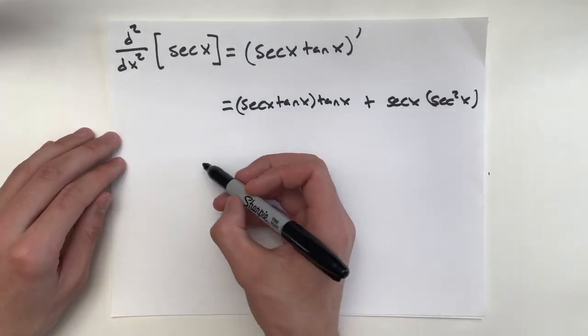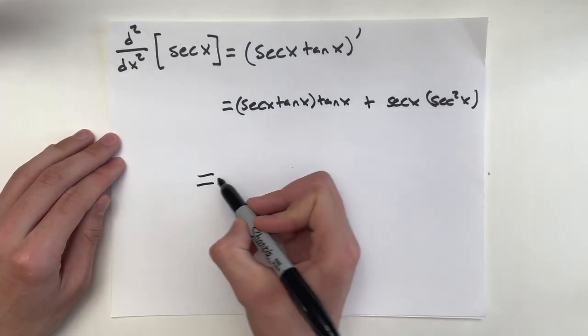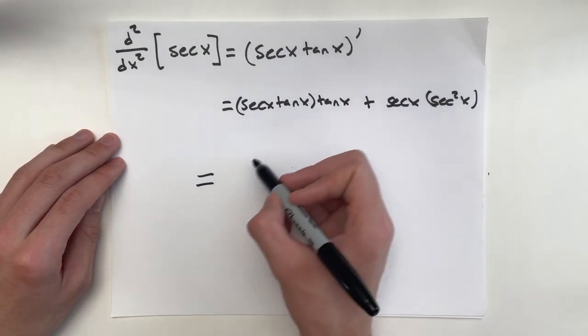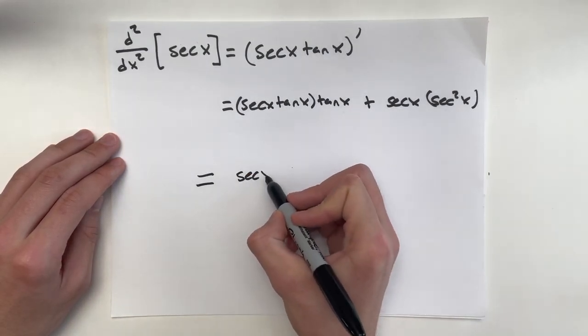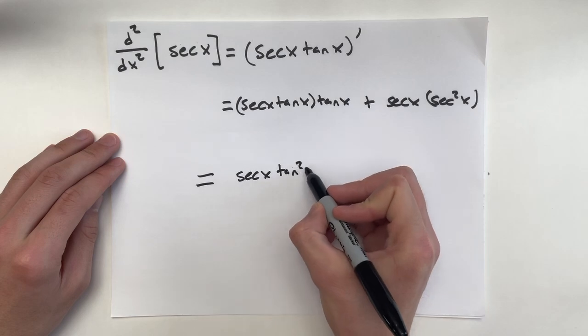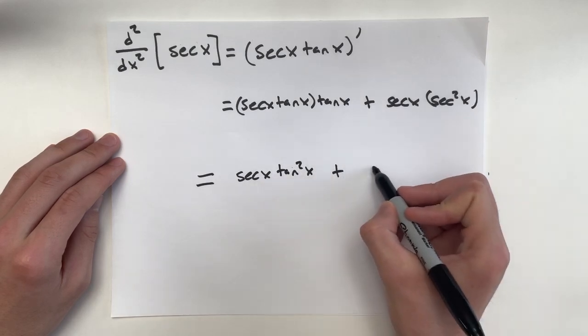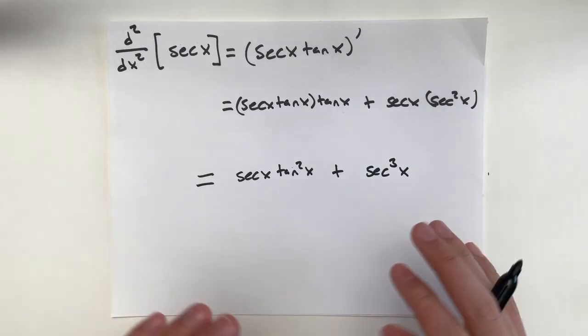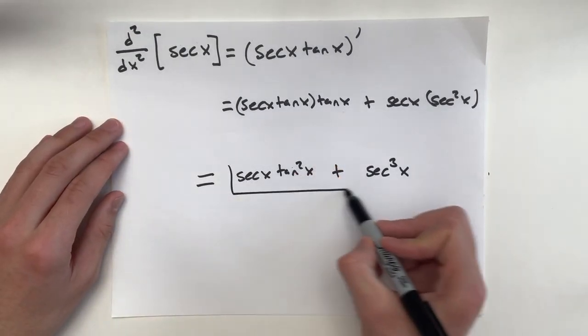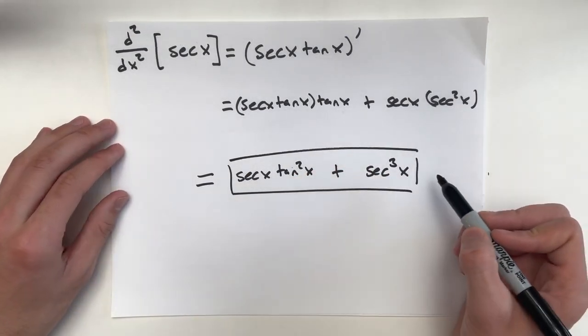You're going to see right here, this is actually going to turn into something very satisfying. That first term: secant x tan squared x plus secant cubed x. And that is the solution, a very satisfying one at that.